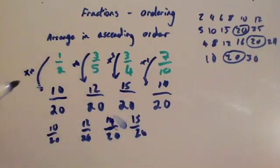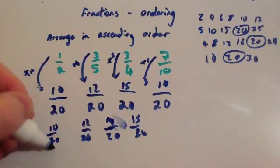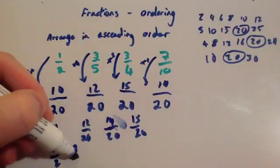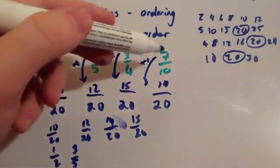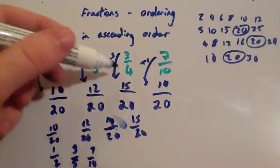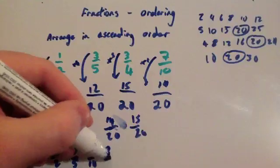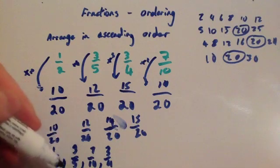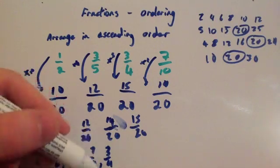And then I would put them back to the original fractions that they were. The 10 twentieths was a half, the 12 twentieths was 3 fifths, the 14 twentieths was 7 tenths, and the 15 twentieths was 3 quarters being the largest. So in ascending order, they are: a half, 3 fifths, 7 tenths, and 3 quarters.